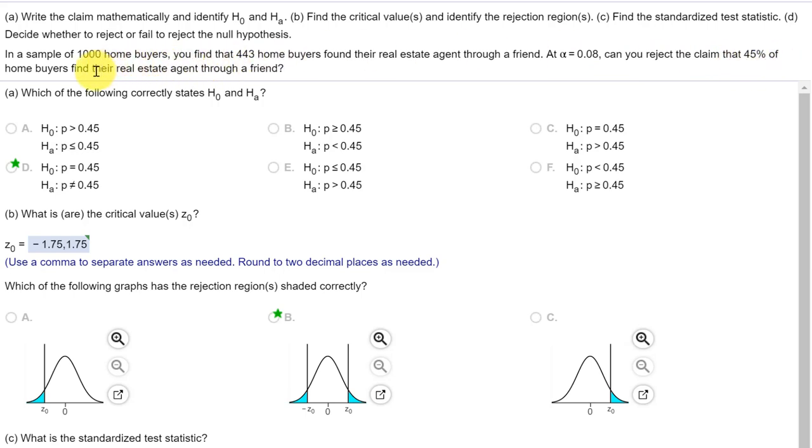Well this is a proportion problem. We can see we've got 45% there for our assumed population proportion and we're given again a proportion here, 443 out of 1,000 in our sample. So we can look at this and very carefully we see that the claim is that 45%.